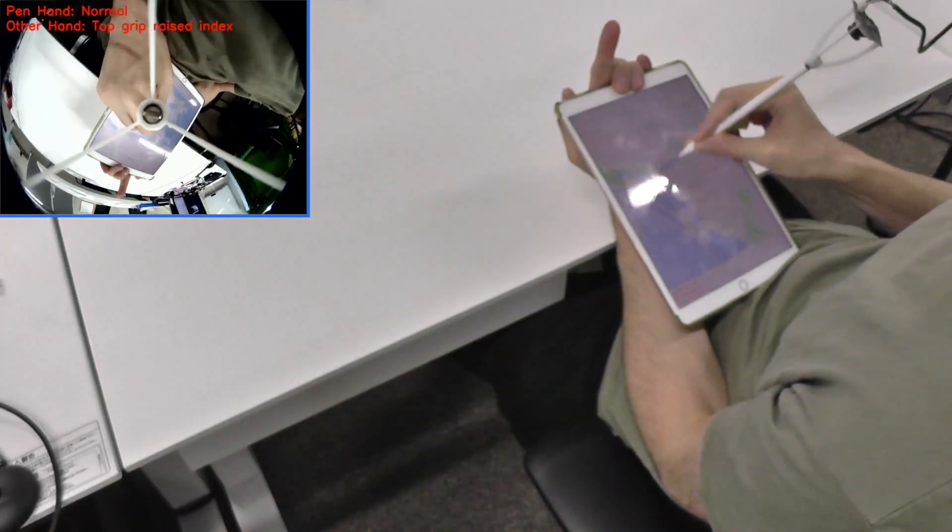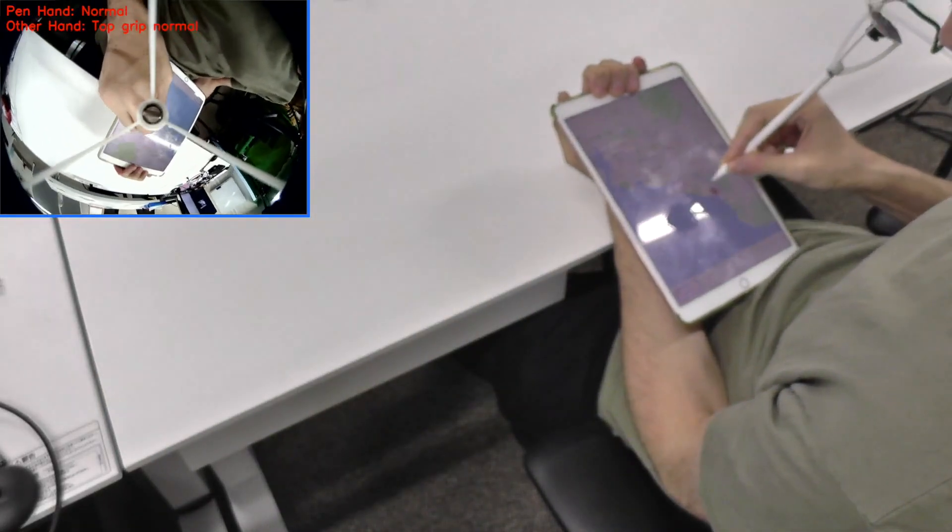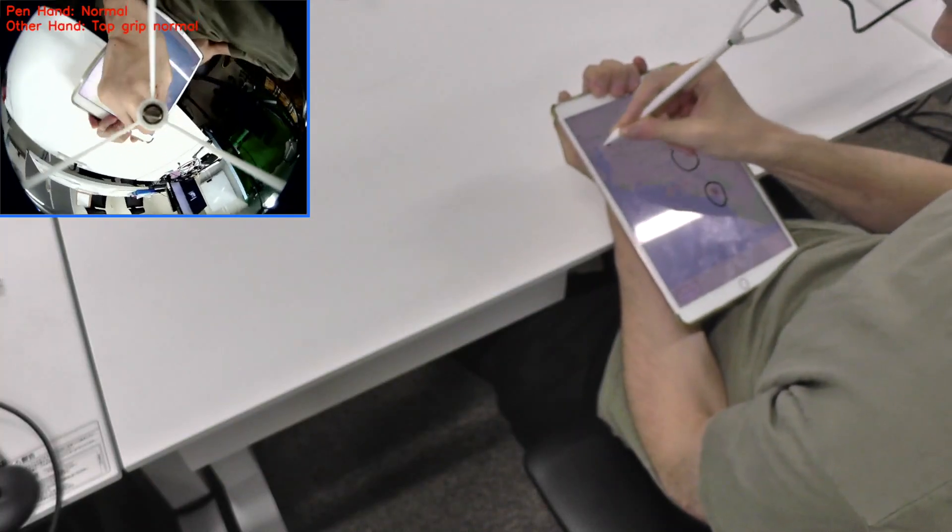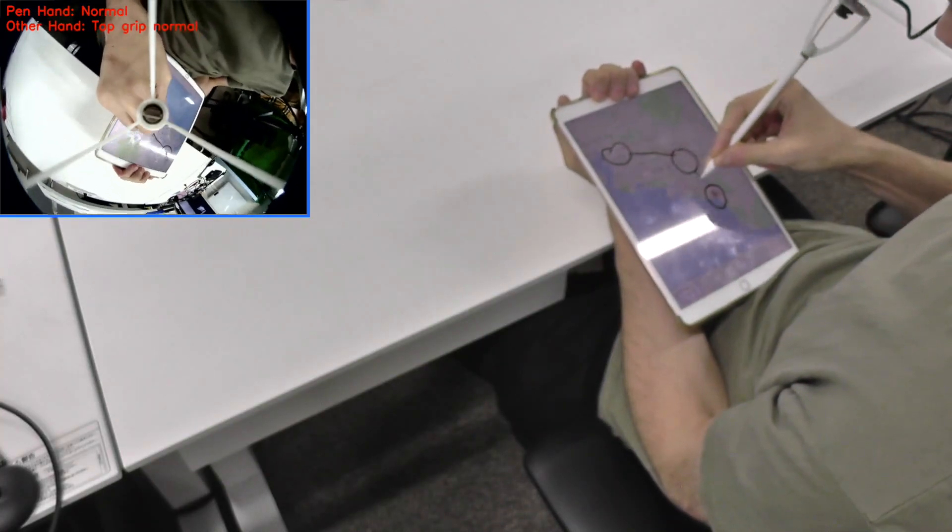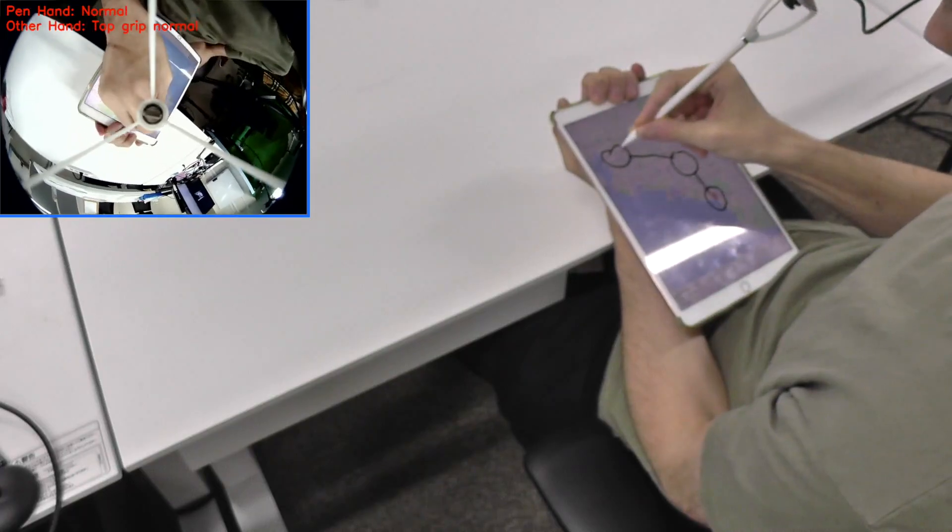The camera can also detect where the user holds the tablet. A firm top grasp allows fingers of the gripping hand to move more easily and a different set of postures can be enabled, for example, a note-taking mode.